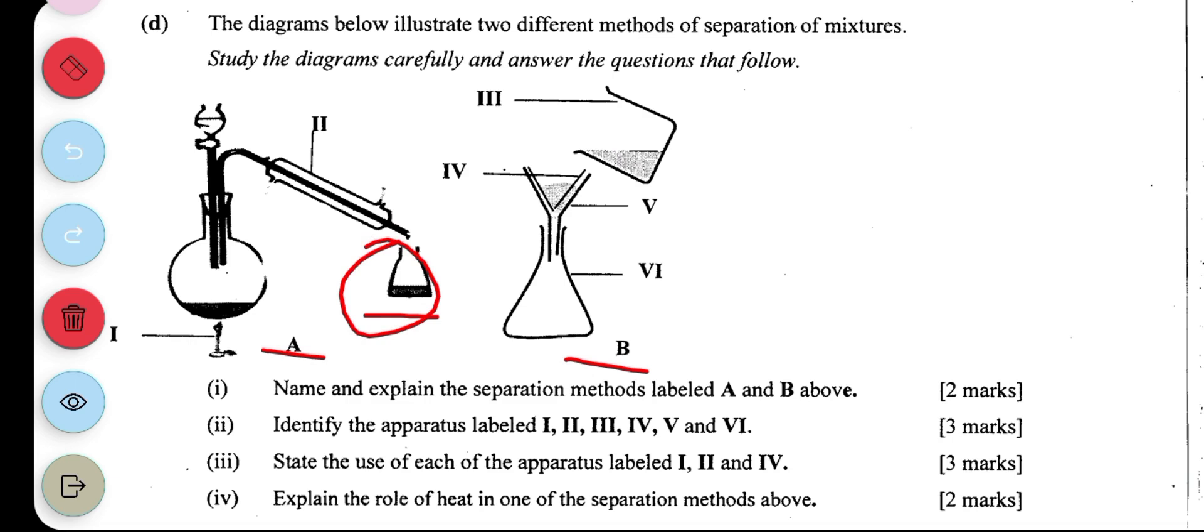The second one is filtration. Filtration is used to separate insoluble solids and a liquid. You have been asked to identify the labeled parts. I is a Bunsen burner, then you have the round bottom flask. II is a condenser. III is a beaker. IV is a filter paper. V is a funnel. Then VI is a volumetric flask.